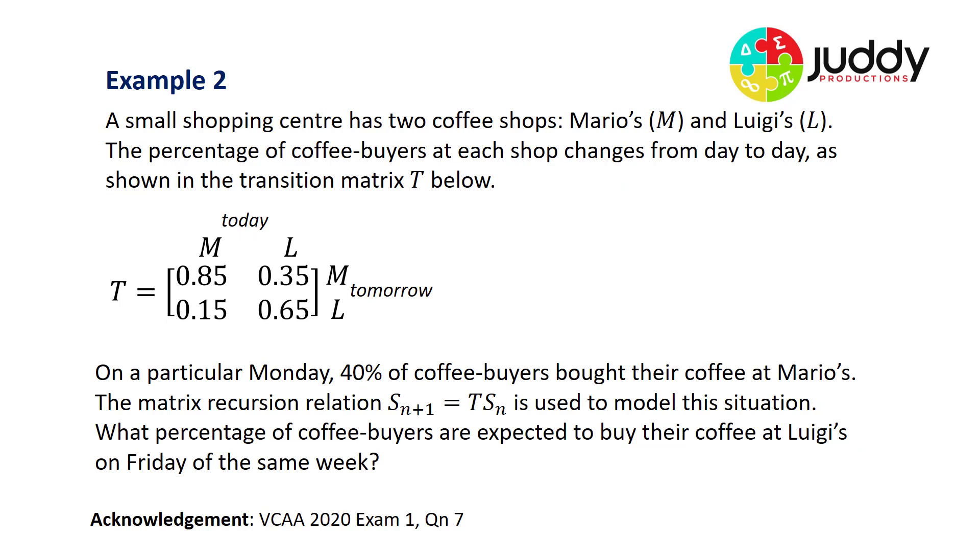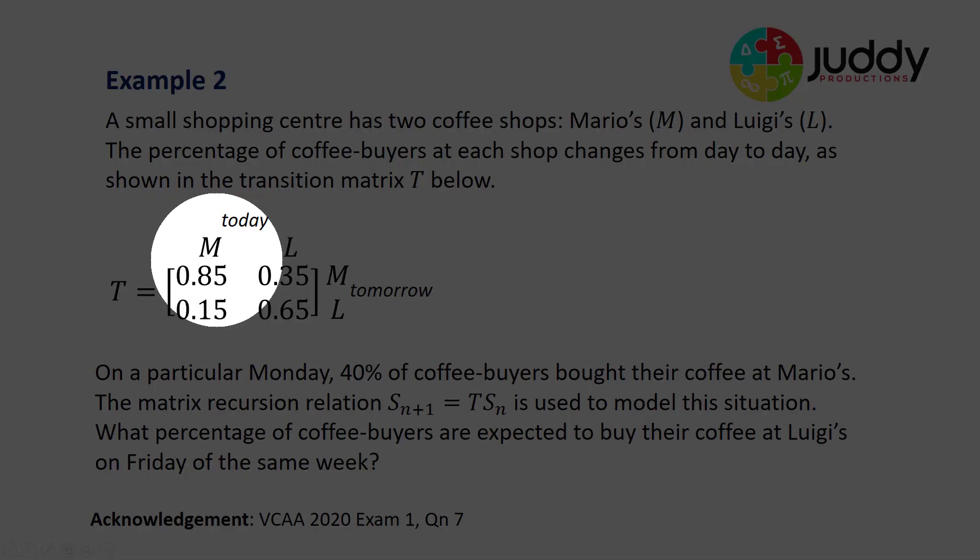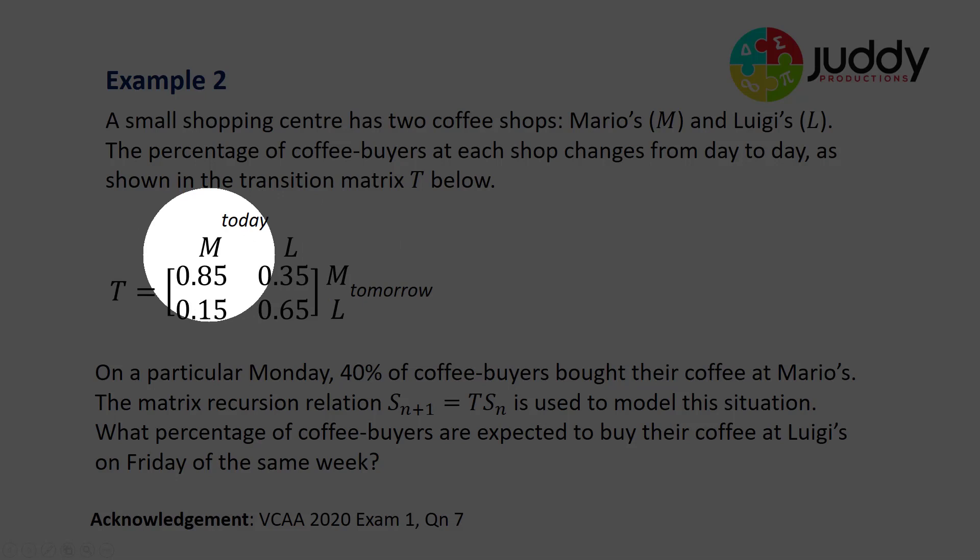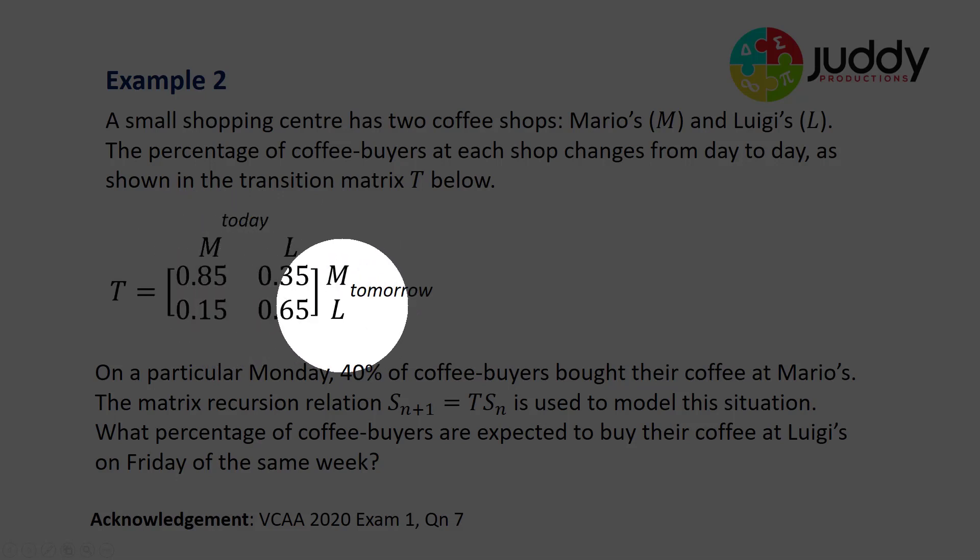Example number two. A small shopping center has two coffee shops, Mario's and Luigi's. The percentage of coffee buyers at each shop changes from day to day as shown in the transition matrix below. This tells us that of those that bought coffee at Mario's today, 85% will buy at Mario's tomorrow. Likewise, 15% will transition to Luigi's tomorrow. And those who bought coffee at Luigi's today, 35% will transition to Mario's, and 65% will remain at Luigi's tomorrow.